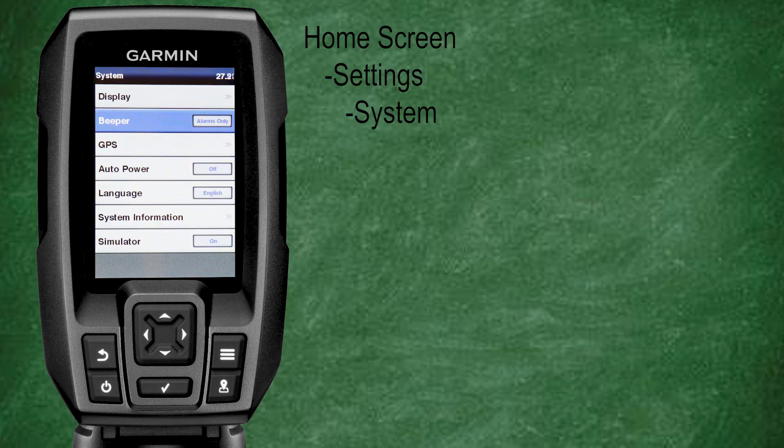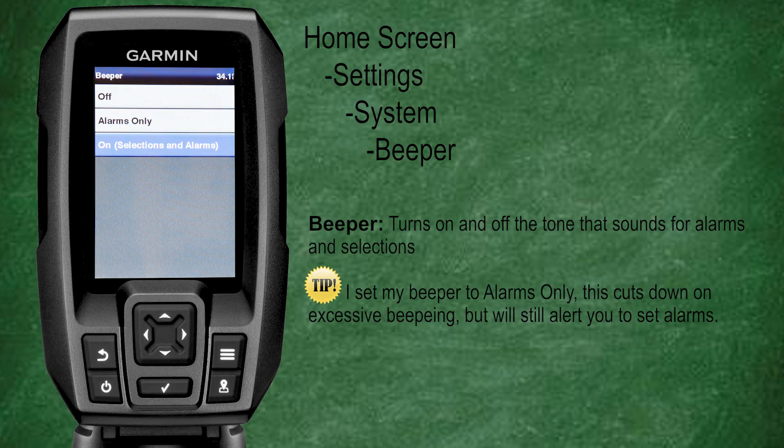Beeper settings are pretty simple — this is where you can decide whether you want your unit to beep. You can choose between having your unit beep whenever you select an item or an alarm is triggered, beep only when an alarm is triggered, or turn off all beeps for silent operation. I personally feel that setting the beeper to alarm only is the best setting, since it alerts you to important information without being excessive.